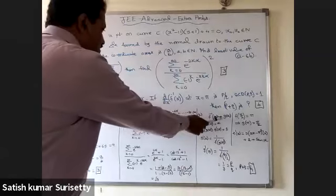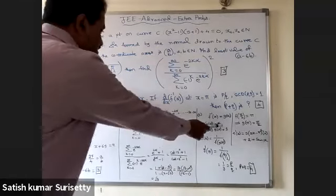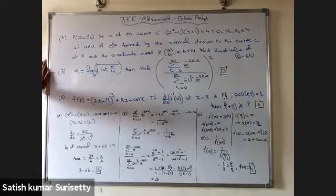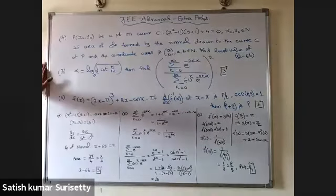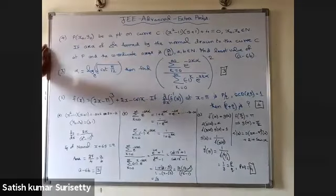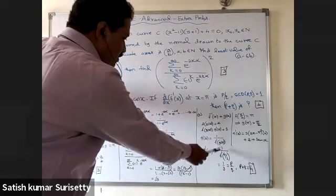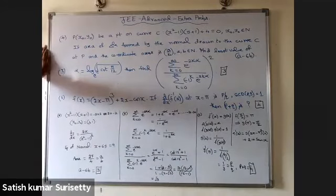For the sixth problem, let f⁻¹(x) = g(x), so their composite is the identity function. Calculate f(π/2): the value is π, so g(π) = π/2. Then g′(x) = 1 / f′(g(x)). Substitute x = π and simplify to get g′(π) = 1/3, so the derivative of f⁻¹(x) at x = π is 1/3.